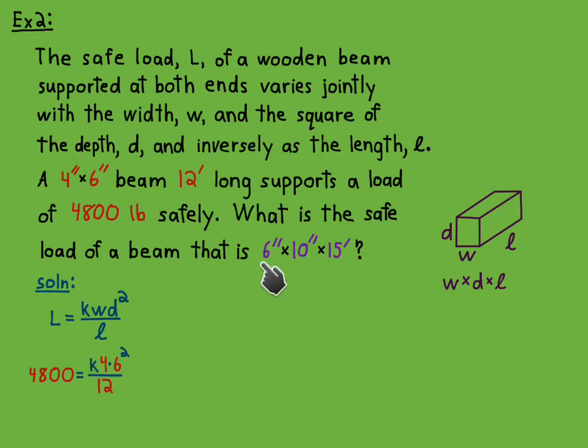You could convert all these to feet and it'll still work out exactly the same, or you can keep them this way which is the smart way to do it, as long as these units for the second set of data are the same. Multiply that out and solve for k, you get k is 400.